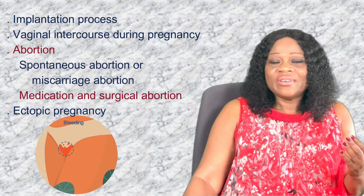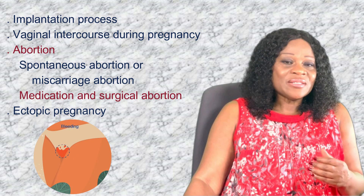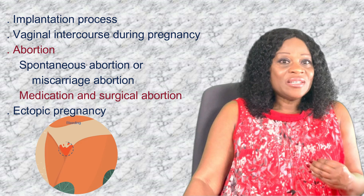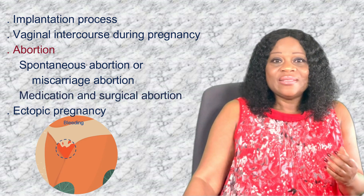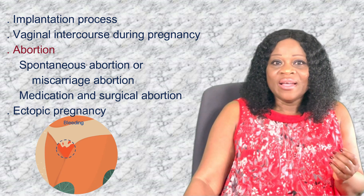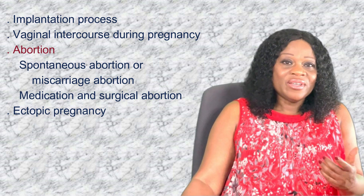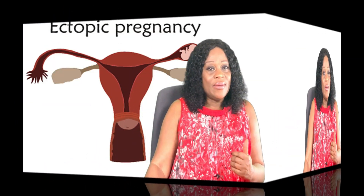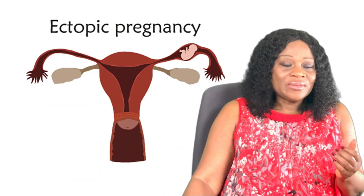Bleeding is a side effect of both medication and surgical abortion, and in most cases the provider will advise about the bleeding. However, abnormal vaginal bleeding could be experienced in the process. Ending a pregnancy is a common decision that millions of people make, as about a quarter of pregnancies end in abortion every year, regardless of whether abortion is legal or not.